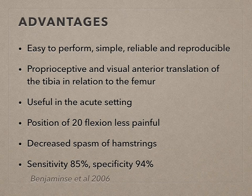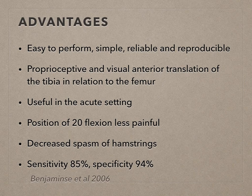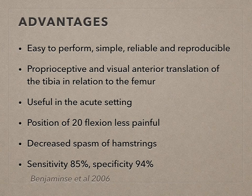There are many advantages of the Lachman test. It is easy to perform, simple, reliable, and reproducible — all characteristics to qualify as a good test. There is proprioceptive and visual anterior translation of the tibia in relation to the femur. It is useful in the acute setting and it is done in the position of 20 degrees of flexion, which is less painful.